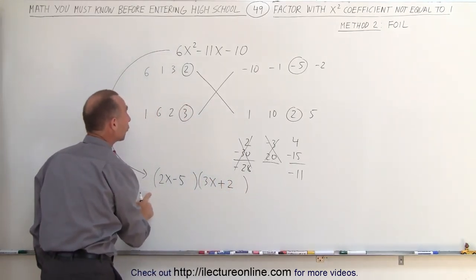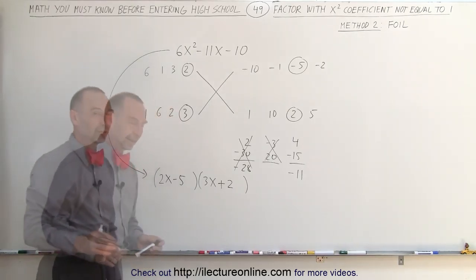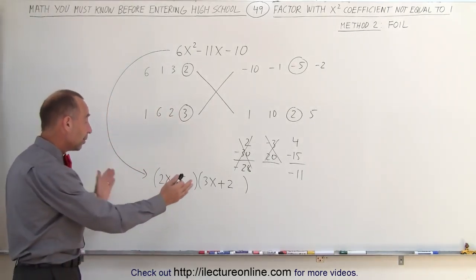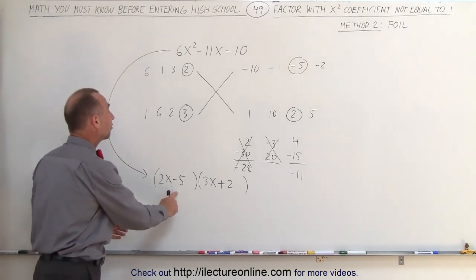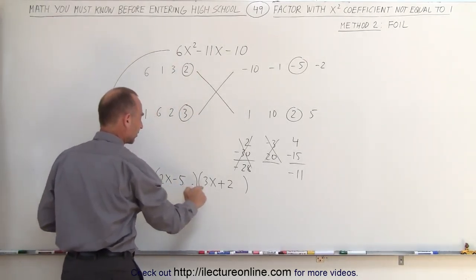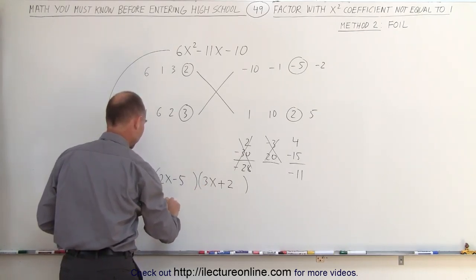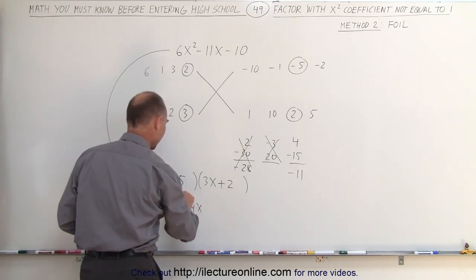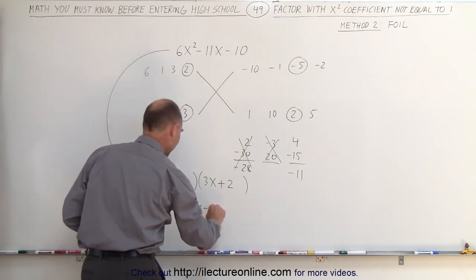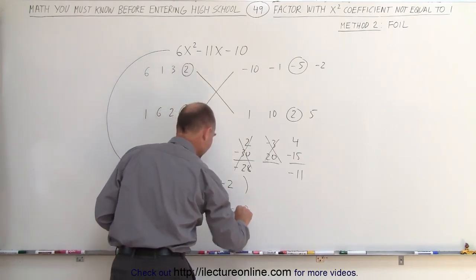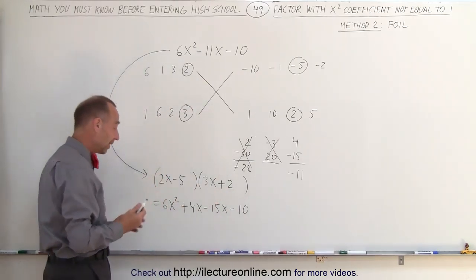So now I have the factored form of my original problem. And to make sure that this is the correct answer, what we can do is check by multiplying everything together again and see if we get the original problem back. So we multiply 2x times 3x, which is 6x squared. 2x times 2, which is plus 4x. Minus 5 times plus 3x is minus 15x. And minus 5 times plus 2 is minus 10.